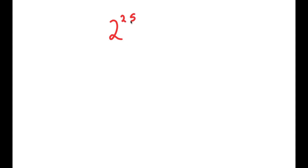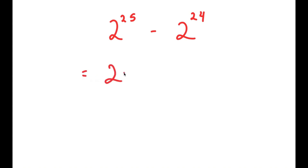In this video I'm going to solve the problem 2 to the power of 25 minus 2 to the power of 24. To solve this I'm going to first start by rewriting 2 to the power of 25 as 2 to the power of 24 plus 1, and I still have this minus 2 to the power of 24.